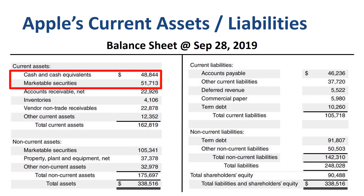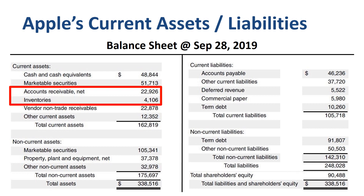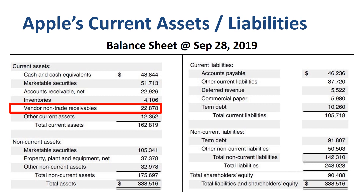Within current assets — unusual for most companies but common for tech companies — an impressive $101 billion of cash and marketable securities. Then accounts receivable of $23 billion, and inventories of only $4 billion. An item very specific to the Apple business model is vendor non-trade receivables. Apple buys components and then sells these onward to outsourcing partners that manufacture sub-assemblies or assemble final products for the company. In short, the vendor non-trade receivables relate to components — raw material inventory for Apple's products.